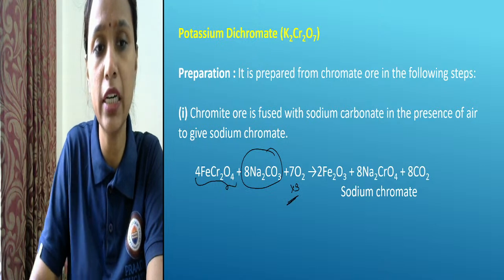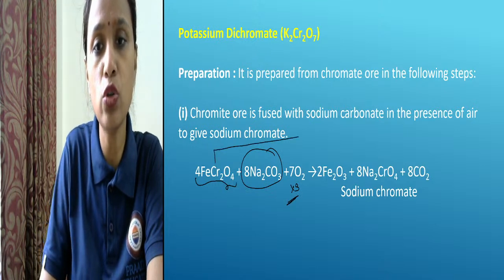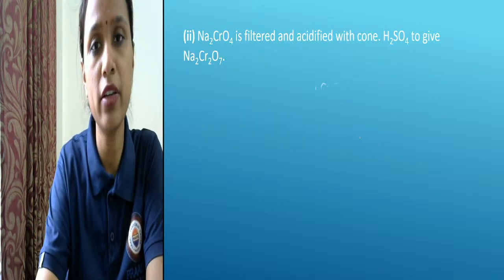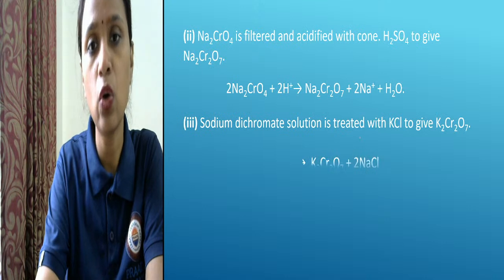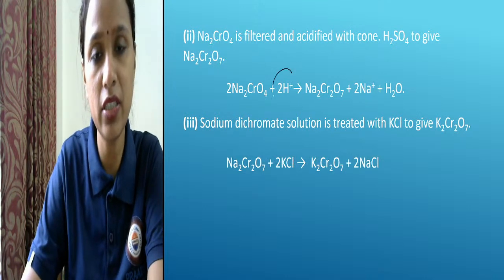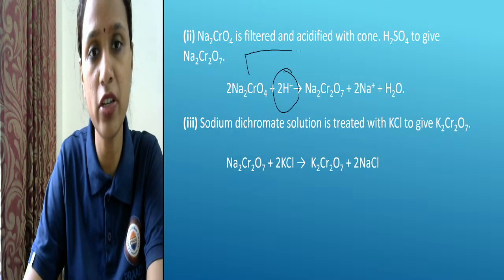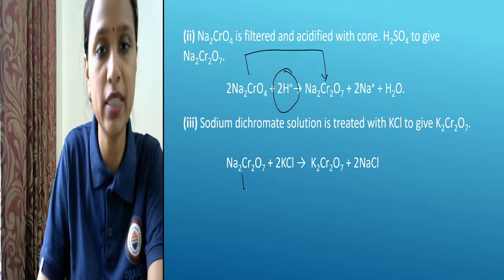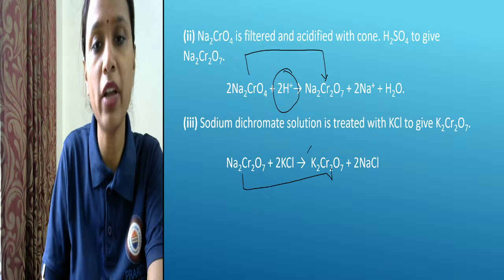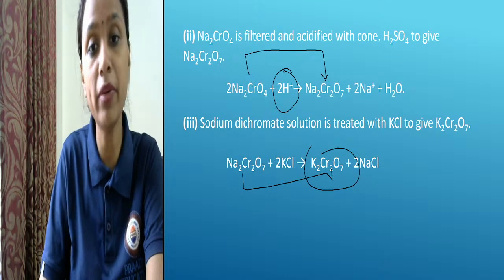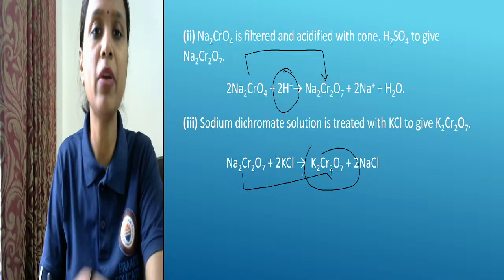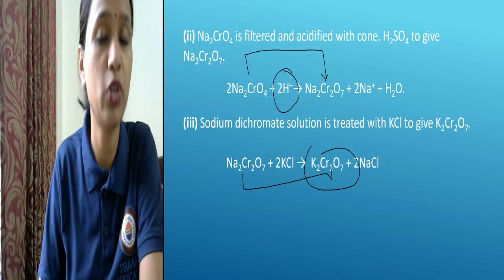Sodium chromate is converted in acidic medium and it changes into dichromate. When treated with HCl it is converted into sodium dichromate, and then potassium dichromate. These three steps complete the preparation of potassium dichromate.